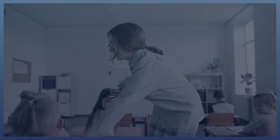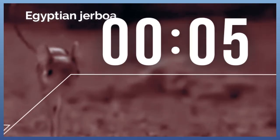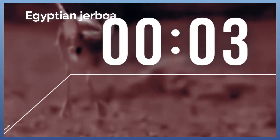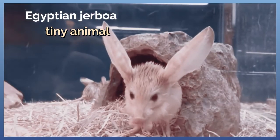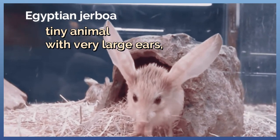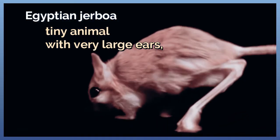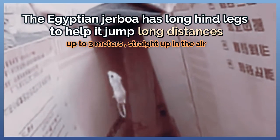Why Egyptian jerboa has long hind legs? The Egyptian jerboa has long hind legs to help it jump long distances. They can reach about up to 3 meters straight up in the air.